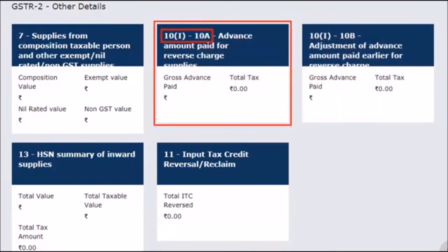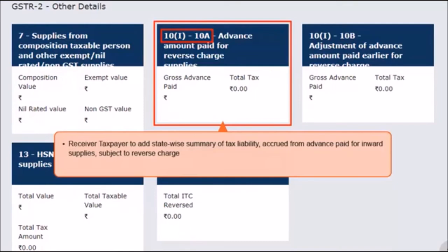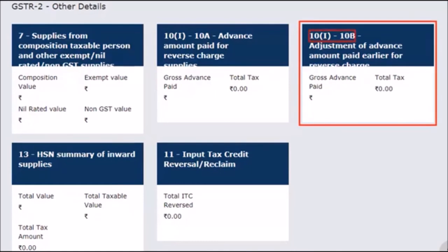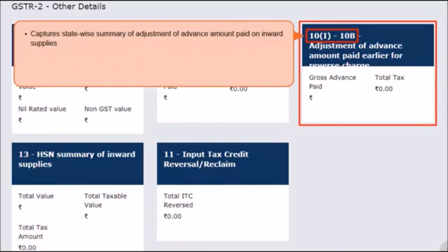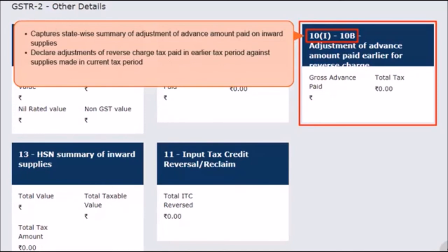The next tile covers Section 10A, which relates to advance amounts paid against reverse-charged supplies. The receiver taxpayer needs to add the state-wise summary of tax liability accrued from advances paid for inward supplies subject to reverse charge, including advances paid to both registered and unregistered taxable persons. Similarly, in the next tile of Section 10B, the state-wise summary of adjustment of advance amounts paid on inward supplies has to be declared. This is for declaring adjustments of reverse-charged tax paid in an earlier tax period at the time of receipt of advance for which supplies are made in the current tax period.